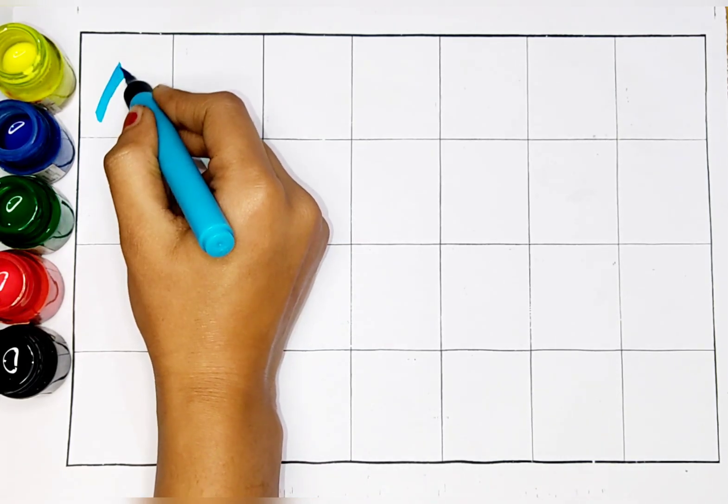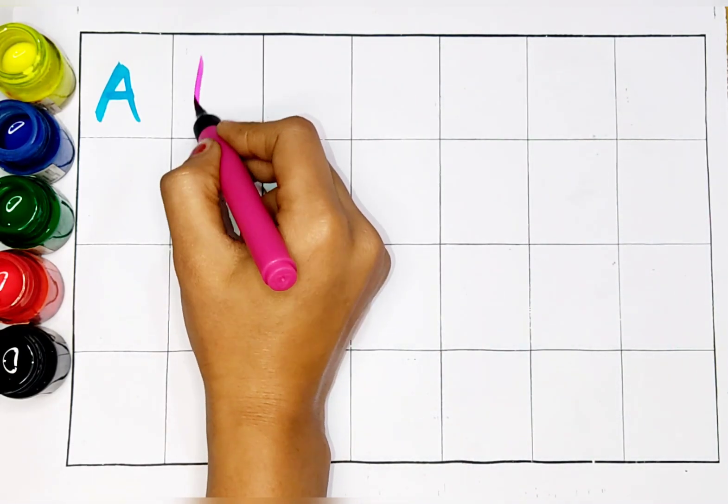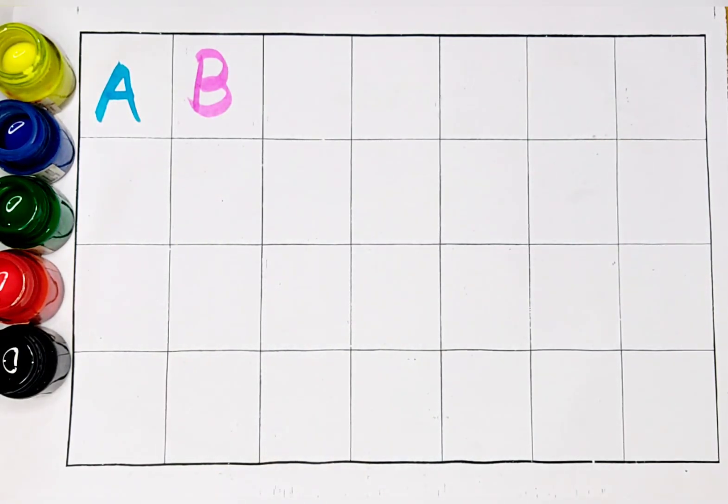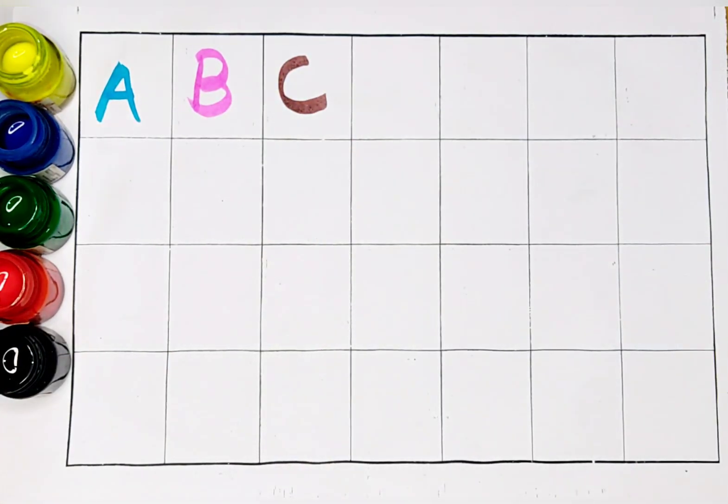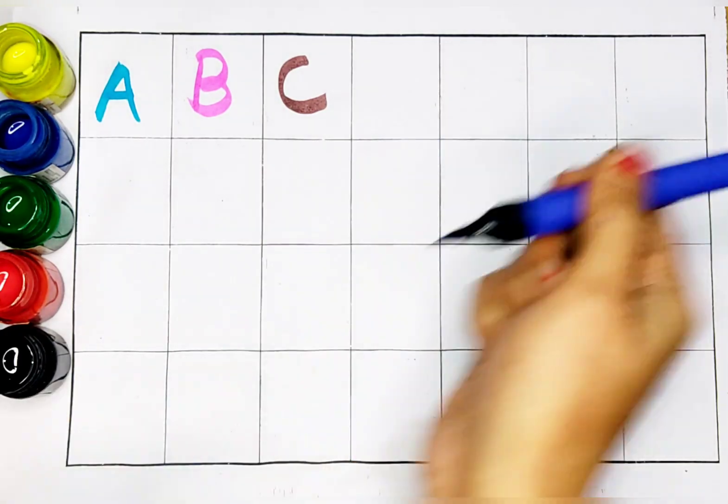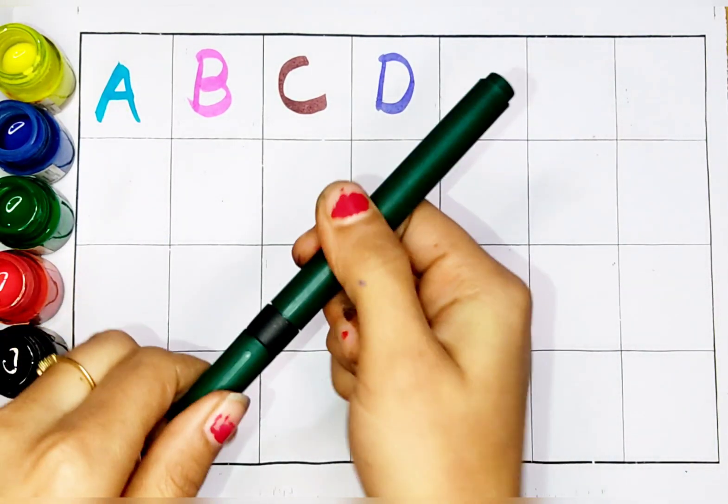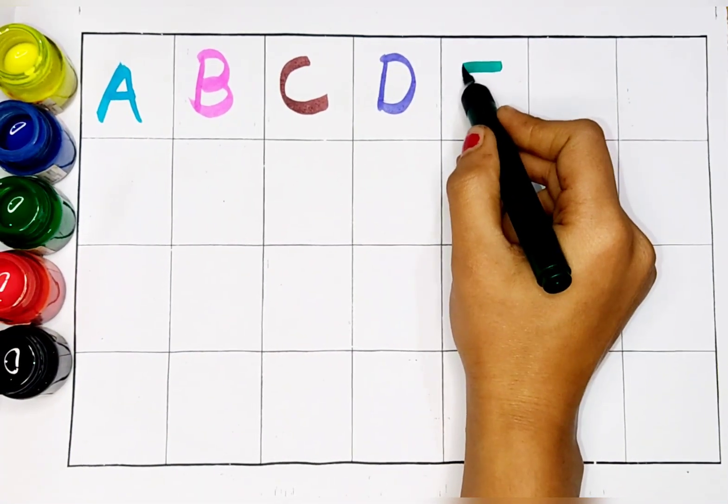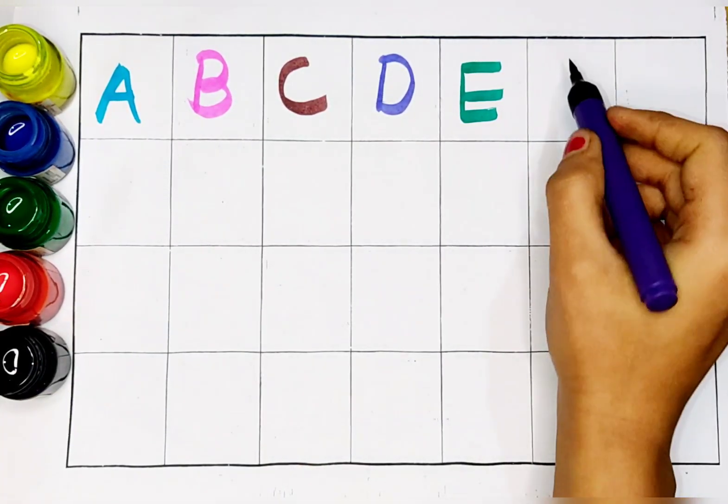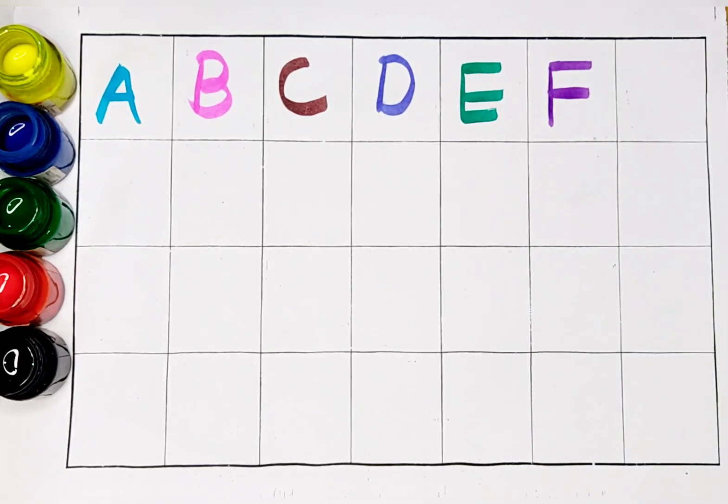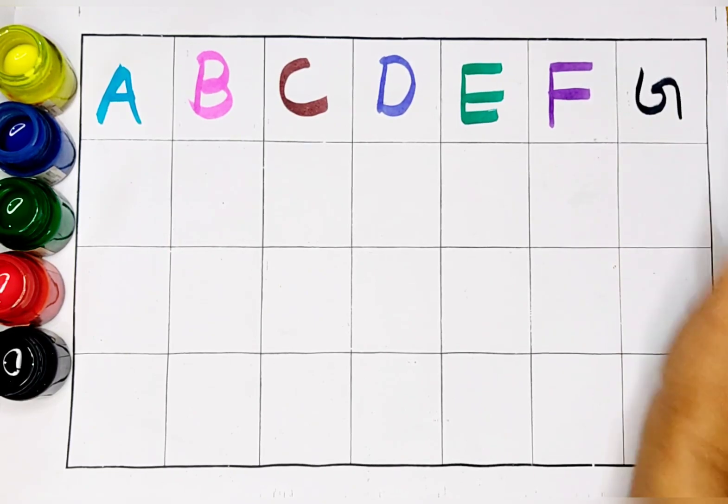A. A for apple. B. B for ball. C. C for cat. D. D for doctor. E. E for elephant. F. F for fish. G. G for girl.